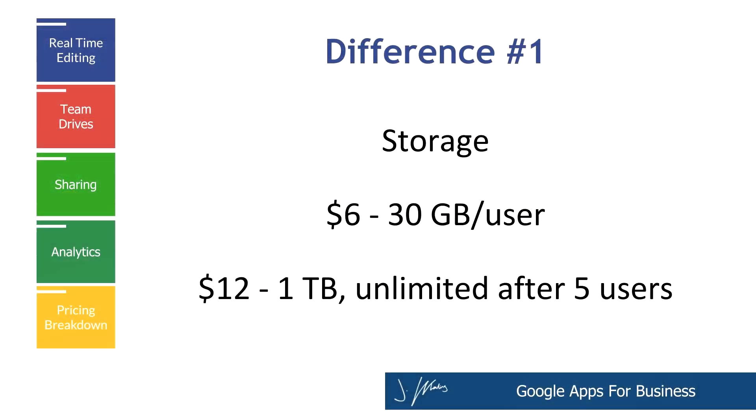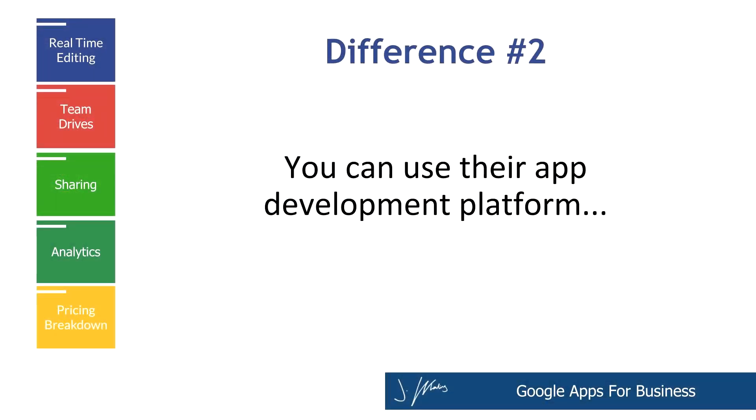So for $12 and $6, the main differences are two things. Number one is your file limit storage. At $6 a month you have 30 gigabytes per user, and at $12 a month it's a terabyte. And if you have more than five people, then it's just unlimited everywhere. The second difference is the ability to use their app development platform, although most people don't really use that — I just wanted to include it in case you wanted to develop some internal apps or advanced workflows.